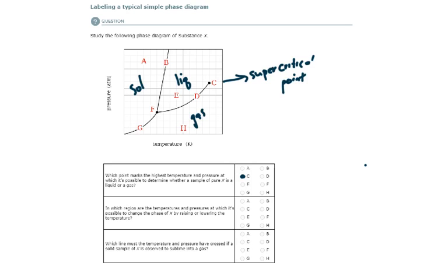The next one says, in which region are the temperatures and pressures at which it's possible to change the phase of X by raising or lowering the temperature? Well, if I'm looking around, one region sticks out to me very clearly, and that is E. Why?